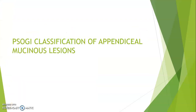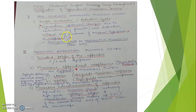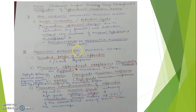According to the Peritoneal Surface Oncology Group International (PSOGI), the appendiceal mucinous lesions are classified into two groups: non-neoplastic appendiceal mucinous lesions and neoplastic appendiceal mucinous lesions.